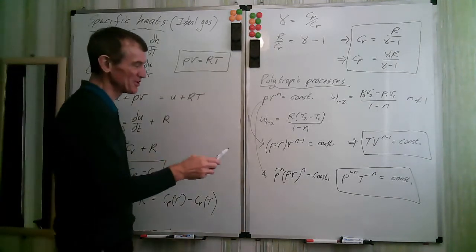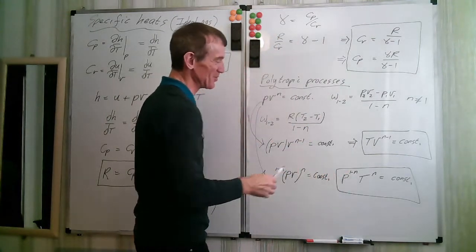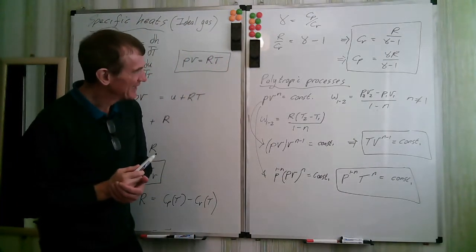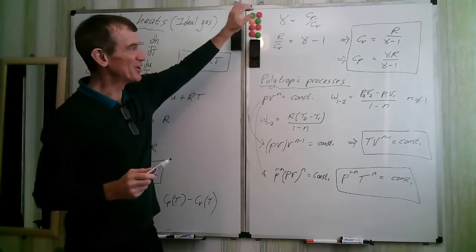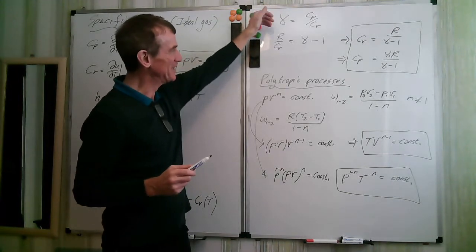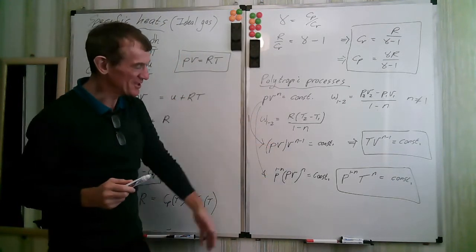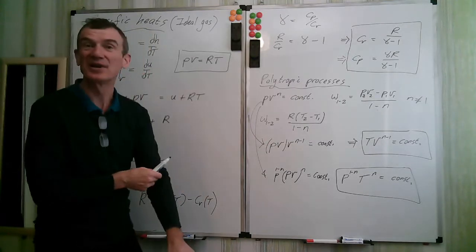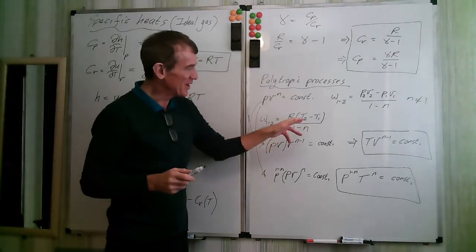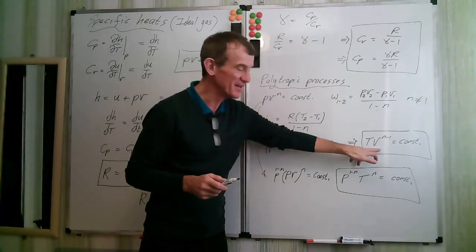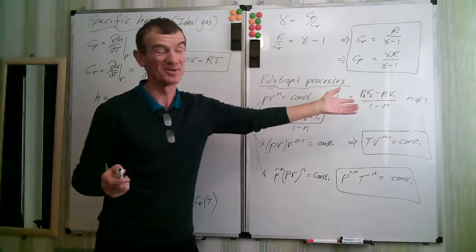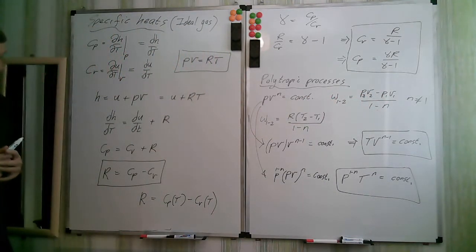A particular polytropic process is when n = γ, which corresponds to an isentropic (constant entropy) process. For polytropic processes with an ideal gas, you can use the equation of state to simplify whichever form is most convenient, depending on what properties are known at states one and two.